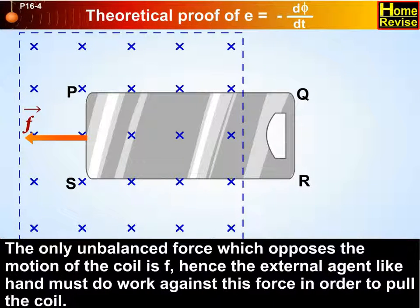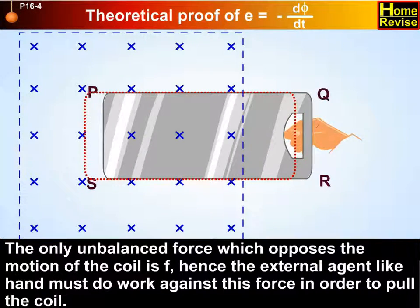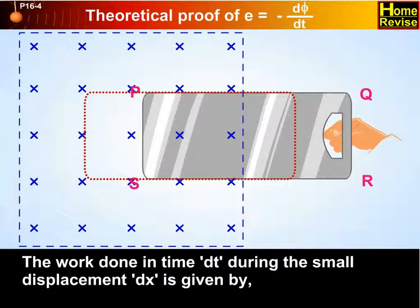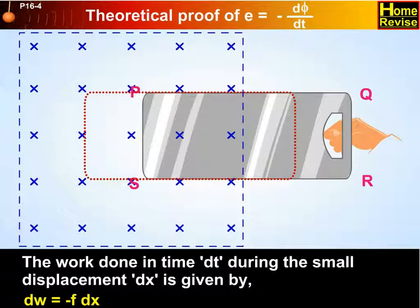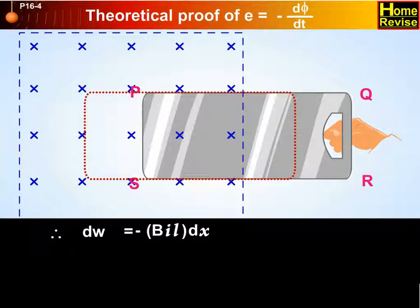The only unbalanced force which opposes the motion of the coil is F. Hence, the external agent like a hand must do work against this force in order to pull the coil. The work done in time dt during the small displacement dx is given by dW equals minus F dx. Negative sign because F and dx are opposite to each other. Therefore, dW equals minus BIL into dx.